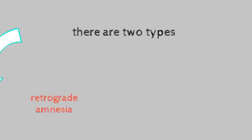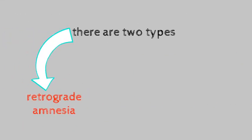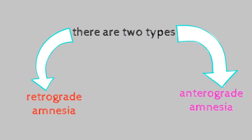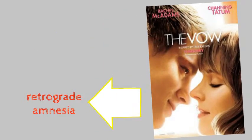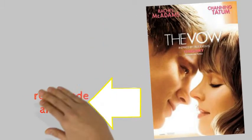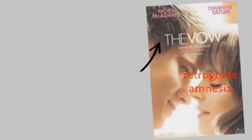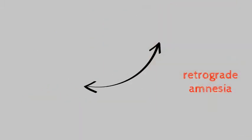There are two types of amnesia. Retrograde amnesia, which is memory loss of past events, and anterograde amnesia, which is the inability to form new memories. This video focuses on retrograde amnesia, so that's what we'll look into.